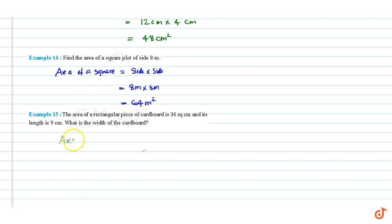This is equal to 36 cm square. Length is given to be 9 centimeters, so 9 times breadth equals 36 cm square.